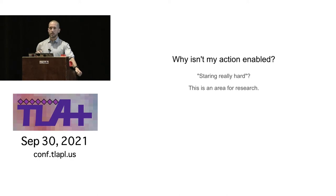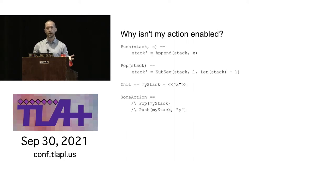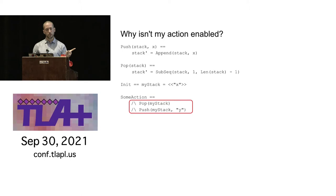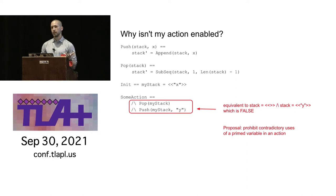The larger question of debugging why an action is never enabled is hard — experts said 'try staring really hard or thinking really hard.' One specific scenario I do have a technique for: if you write something like 'stack = <<>> /\ stack' = <<y>>', that's a contradiction saying the stack is both empty and equal to y. The action is false and never enabled. I propose TLC should by default prohibit any contradictory use of primed variables — if you write this, you're probably making a mistake.